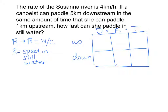Let me switch colors for you. So if I know that the rate of the Susanna River is 4 kilometers, that means upstream I can go 1 kilometer as a distance, and 5 downstream. Well, R for going upstream would be R minus 4, and going downstream would be R plus 4, because the current is either pushing us or pulling us. And it says in the same amount of time, so time is still unknown — that becomes our T.